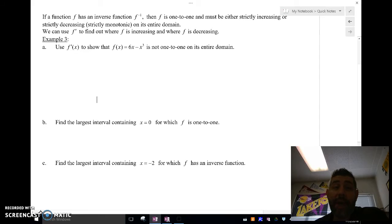We can use f prime to find out if f is always increasing or always decreasing, which would tell us, in fact, that it's one-to-one. So let's go ahead and do this for part a here.